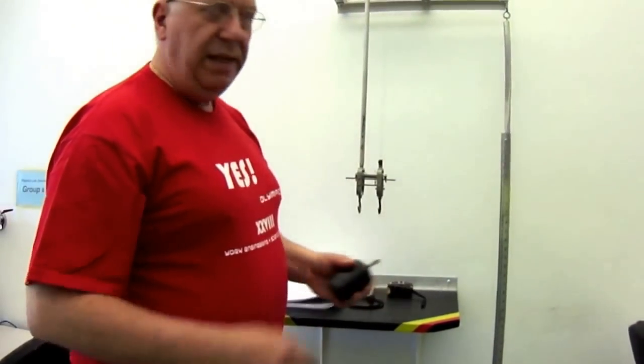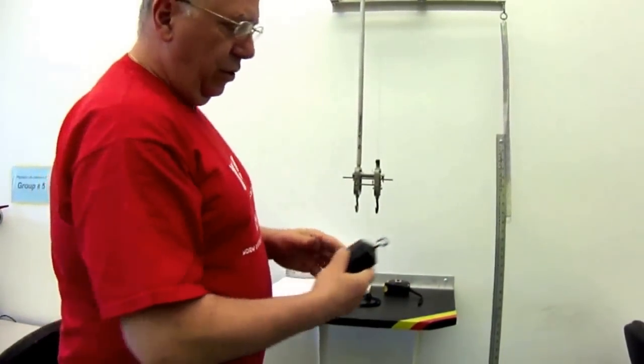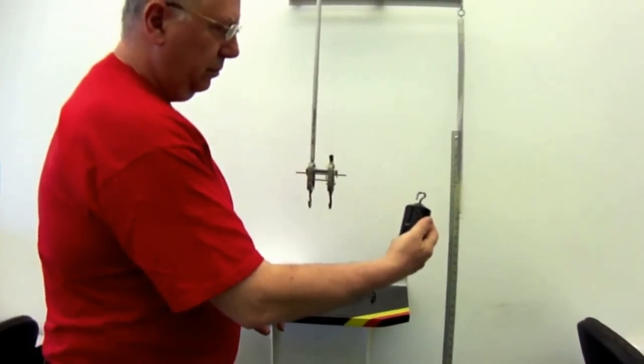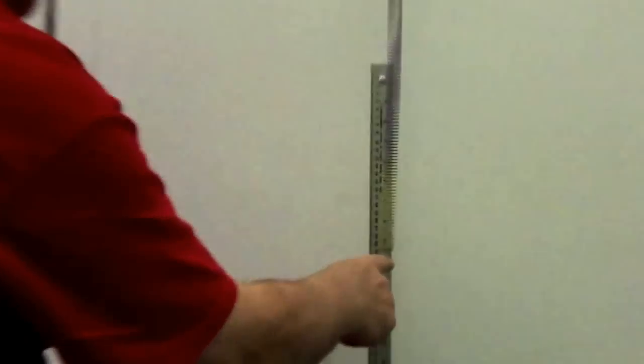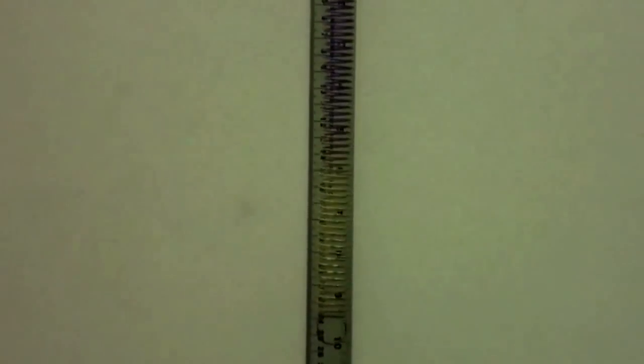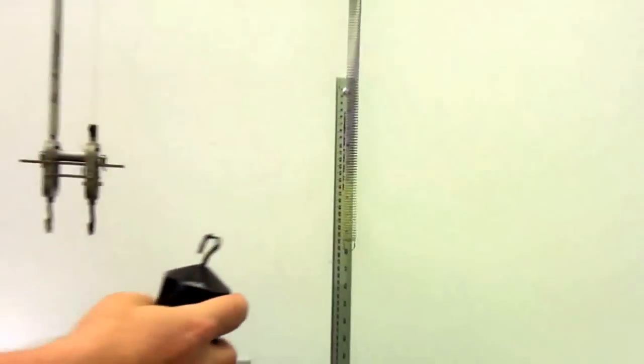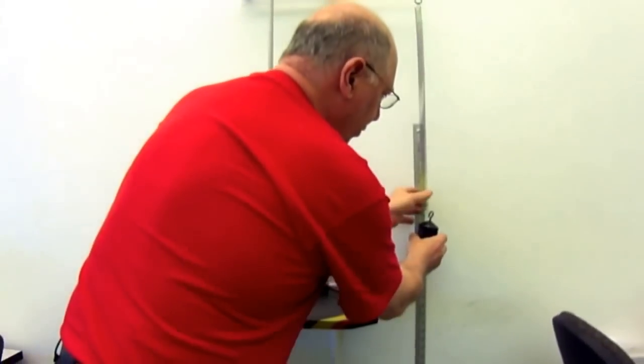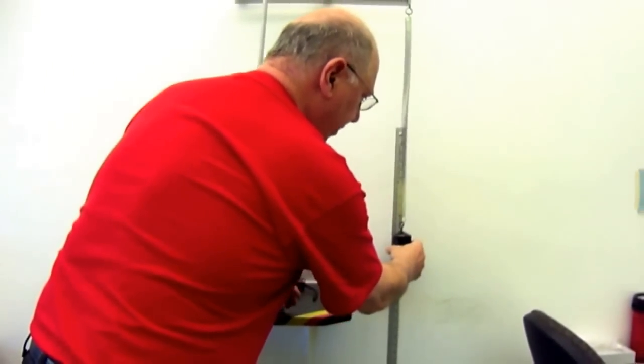The first technique is Hooke's law. We take a 1,000 gram mass, attach it to the end of the spring and see how much the spring has been displaced when you apply a force of a thousand grams. So you attach it like this to the end of the spring.